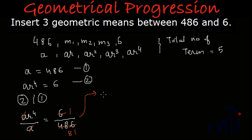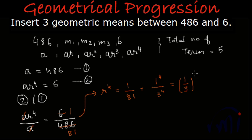From here we get r⁴ = 1/81. Now 1/81 can be written as 1⁴/3⁴, which equals (1/3)⁴. So from here we get the value of r as 1/3 or −1/3, because the power of r is 4, which is an even number, so the value of r can be either positive or negative.